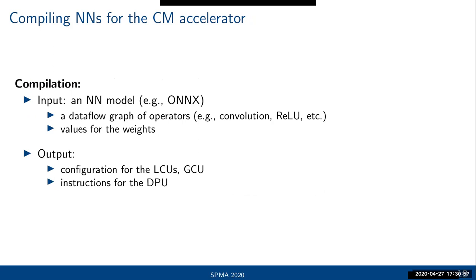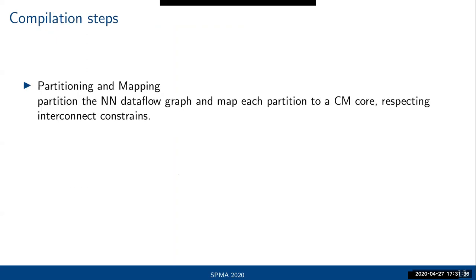The compilation process takes as input a neural network model, typically in ONNX format, which includes both the data flow graph of operators and the weight values — since we're doing inference, the weights are already known. The output includes configurations for the control units, instructions for the digital units, and crossbar configurations based on the weight values. Compilation happens in two phases: first, partitioning the data flow graph and mapping each partition to a computational memory core, respecting the interconnect constraints so communicating partitions are mapped to cores with an edge in the topology.